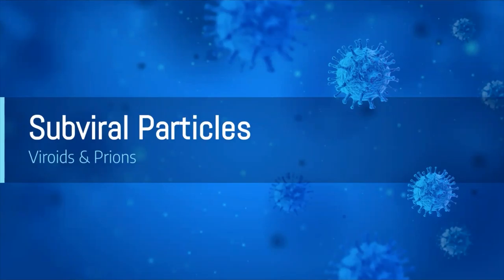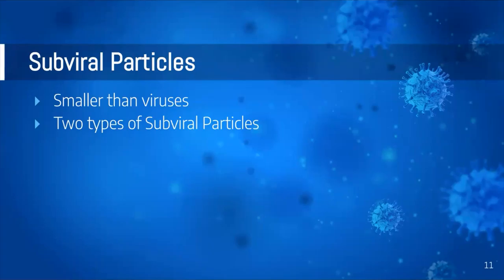Subviral particles are smaller than viruses, as you can assume from the root 'sub.' They are infectious agents just like viruses. Viruses are acellular, meaning they are only made of a protein coat, better known as a capsid, which protects the genetic information inside — either DNA or RNA. Because they are acellular, they have no organelles, so they can't make their own energy (ATP) or replicate themselves. That summarizes why they are non-living, and because they cannot replicate without a host, they are infectious agents.